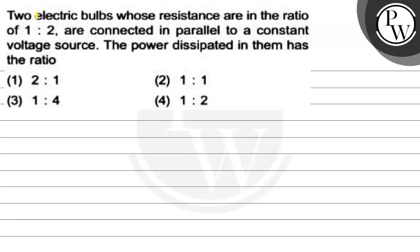Hello, let's read the question. The question says two electric bulbs whose resistance are in the ratio of 1 is to 2 are connected in parallel to a constant voltage source. The power dissipated in them has the ratio.